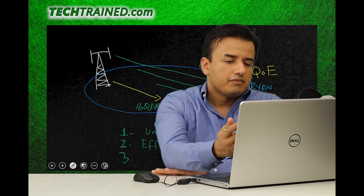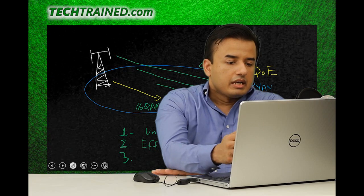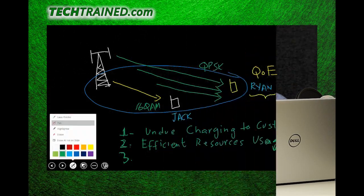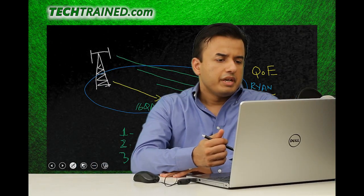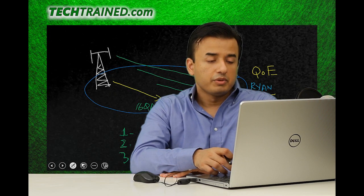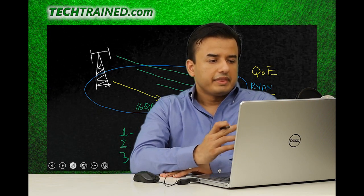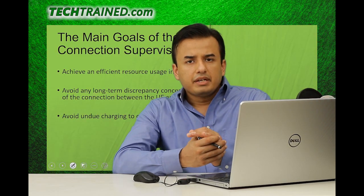Point number three: if Ryan keeps standing in poor coverage and does not move, resources will remain tied up for that user without improving the quality of experience — what can be called a 'hanging' of resources from eNodeB's perspective. Such a user becomes a burden on the network while also receiving poor service. These three points explain why radio connection supervision is necessary.